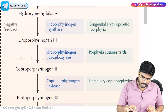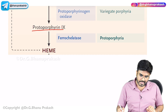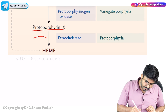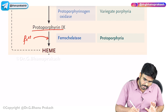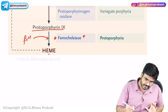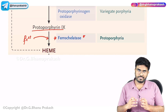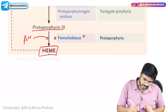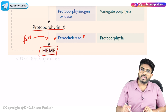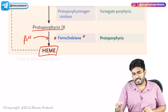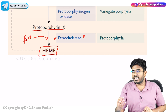In the last step of heme synthesis, protoporphyrin accepts iron with the help of the enzyme ferrochelatase. So the three key enzymes are: ALA synthase, ALA dehydratase, and ferrochelatase.